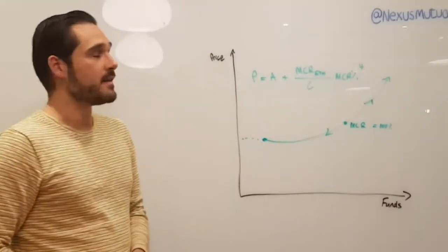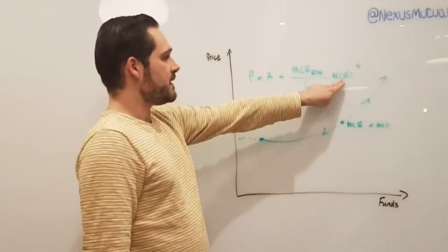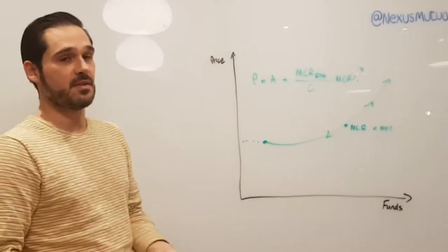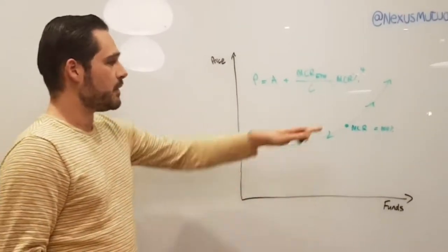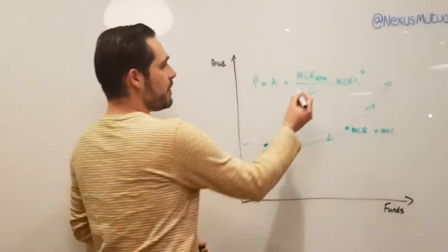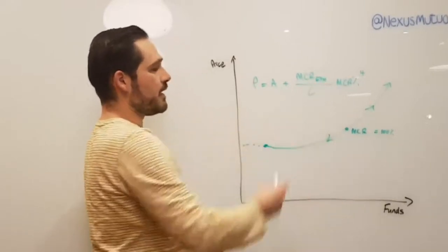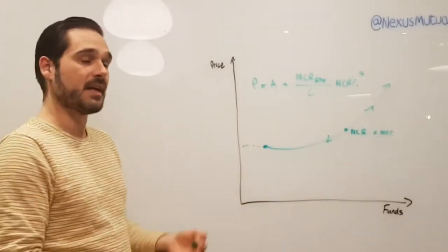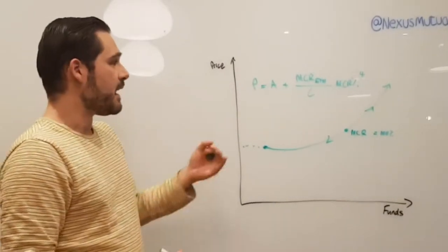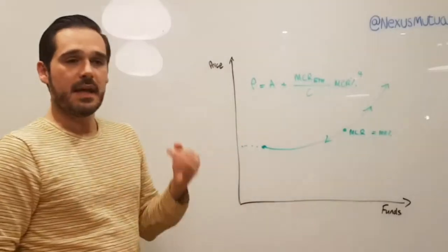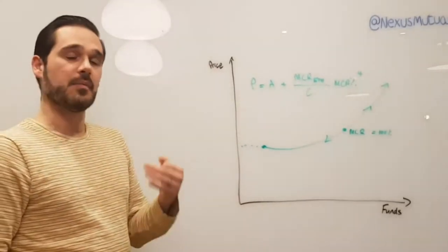The other key point is that the MCR percentage is kind of like the short-term driver of the funding position of the mutual. It will fluctuate reasonably regularly with people coming in and out in claims. This number, the MCR in Ether, is like a fixed value, and that's kind of the amount of capital we need to back the policies we have. That is a driver of long-term performance of the mutual.